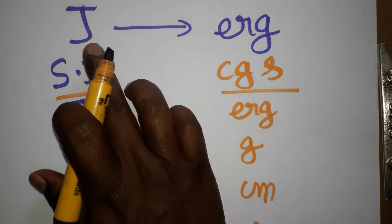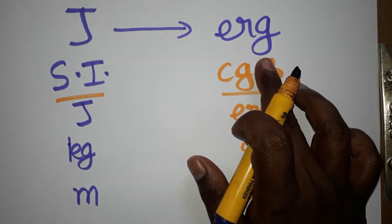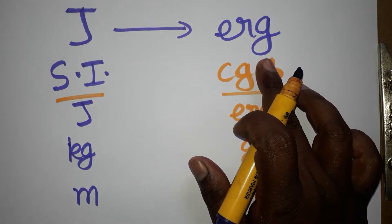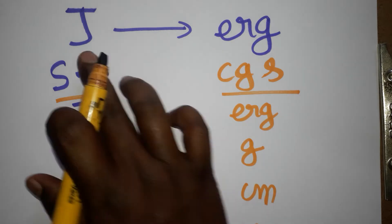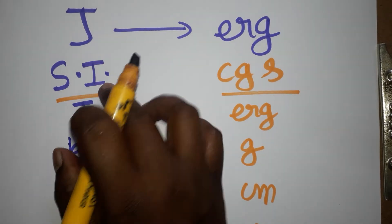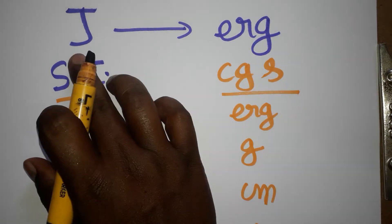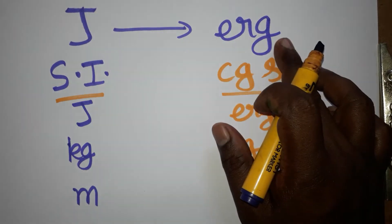Today we are going to learn how to convert from Joule to the ERG using the dimensional analysis concept. First we will learn what is an SI unit and what is a CGS unit, and we are going to convert an SI unit to a CGS unit.